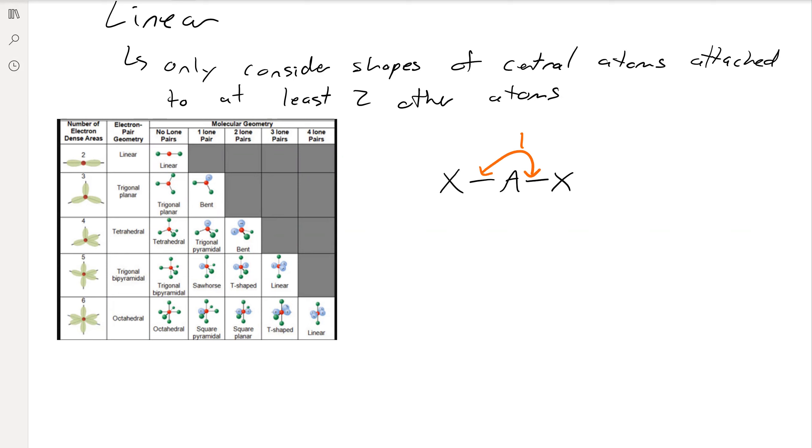So we'll get a bond angle here of 180 degrees, right, and we can see two electron-dense areas, no lone pairs, linear.